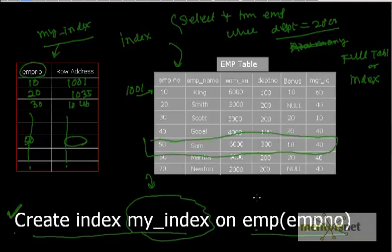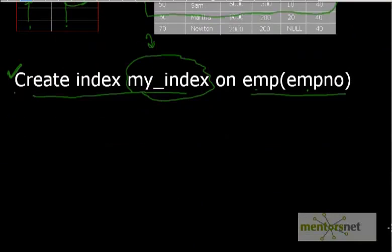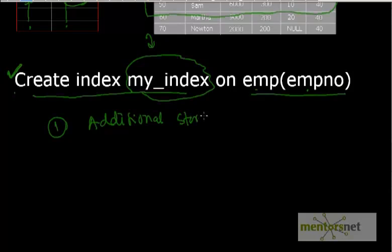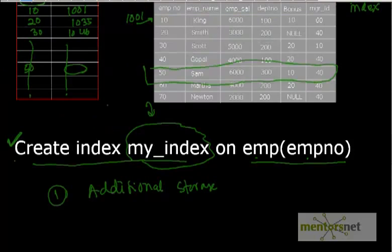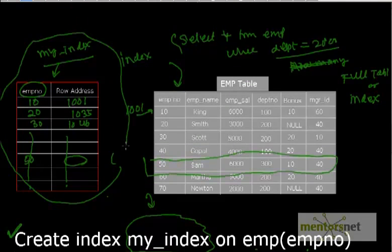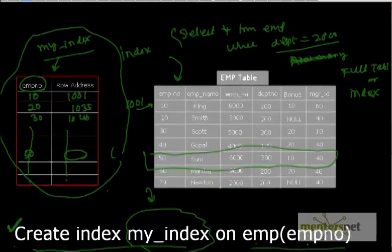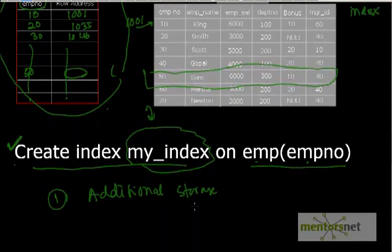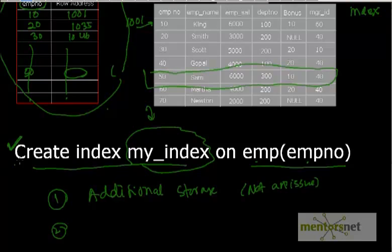Now let's discuss the issues with indexes. The first issue is additional storage — we need to create this extra index structure that did not exist before. However, disk is very cheap nowadays, and the performance benefit of faster queries far outweighs the storage cost, so this is not really a problem.